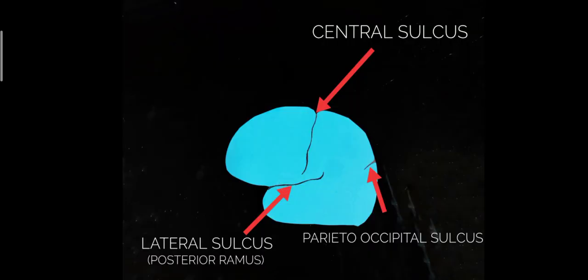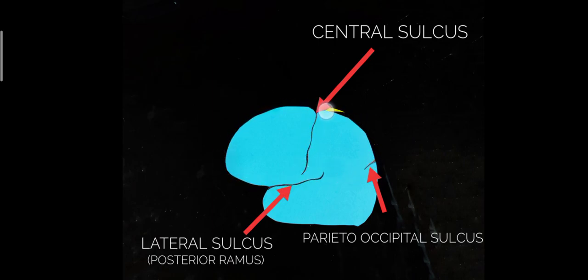Here we have a representation where I have removed all other sulci and gyri and only kept the prominent sulci. This one is the central sulcus which separates the frontal lobe from the parietal lobe. This prominent sulcus running backwards and slightly upwards is the lateral sulcus or the posterior ramus of the lateral sulcus. And here you can see a small prominent sulcus — that is the parieto-occipital sulcus.